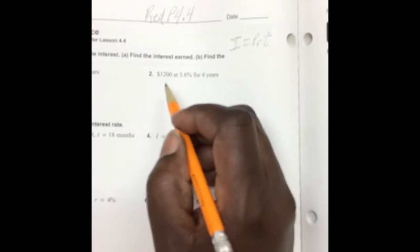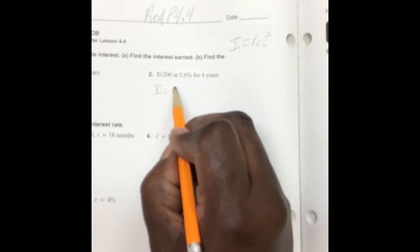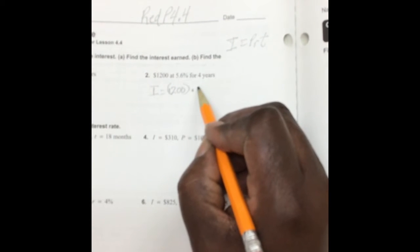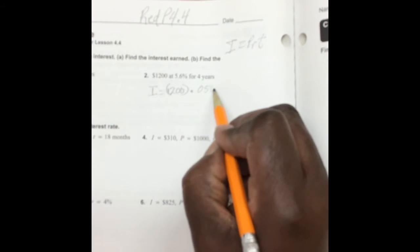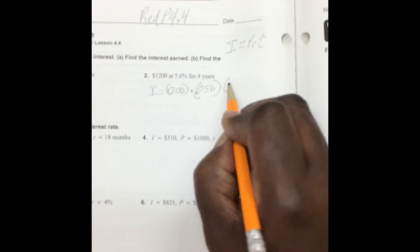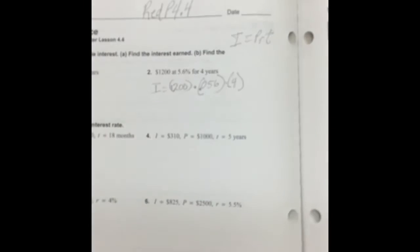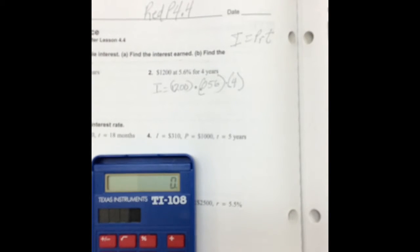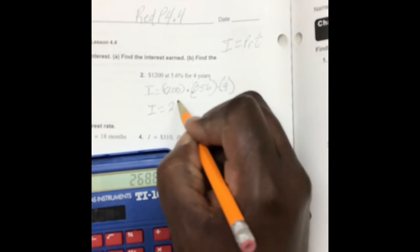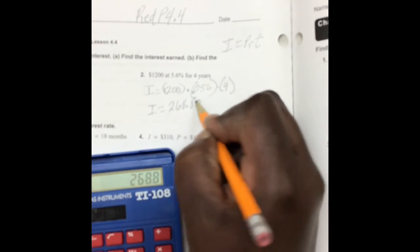In this case I would be equal to 1200 times 0.056 times 4. So let's put it in. 1200 times 0.056, 0.056 times 4. Therefore we have I is equal to 268 and 8 tenths.